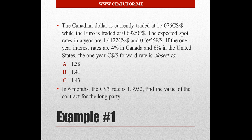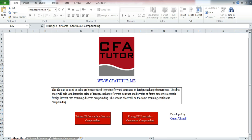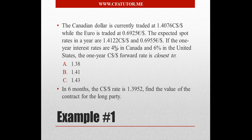Now let's move to the example. This is a question from the daily CFA trivia. The Canadian dollar is currently traded at 1.4076 Canadian dollars per American dollar, while the euro is traded at 0.6925. The expected spot rates in a year are 1.4122 CAD/USD and 0.6955 EUR/USD. The one-year interest rates are 4% in Canada and 6% in the United States. We want the one-year forward rate for the Canadian dollar per dollar — the key inputs are the current spot rate, the forward rate, and both countries' interest rates.